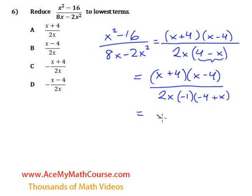Now, I'll copy x plus 4 times x minus 4 up top again. Down below, I have 2x times negative 1, negative 2x. And negative 4 plus x is the same as x minus 4. Now, I can cancel them out. And they're gone.